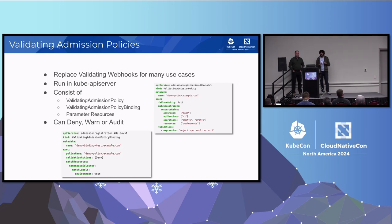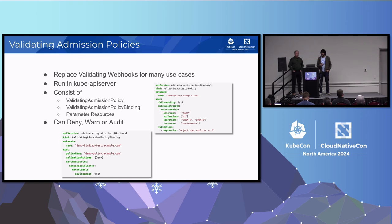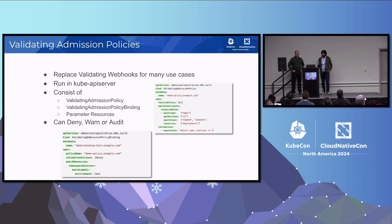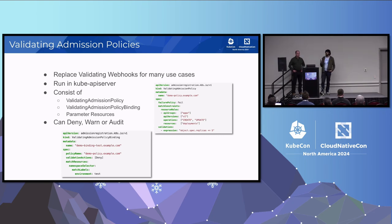Validating admission policies use CEL to declare validation rules. Each validating admission policy consists of three components: the validating admission policy itself — the policy definition specifying rules and conditions; the validating admission policy binding — which connects the policy to a specific resource or namespace; and parameter resources — which allow you to parameterize policies, enabling flexible reusable rules that adjust based on different inputs.